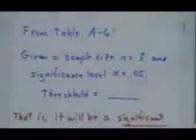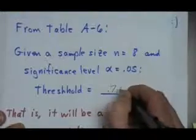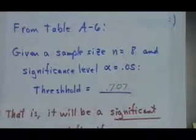And 0.05 and 0.01, we're going to use 0.05 significance level. So for 8 it's 0.707. So 0.707.